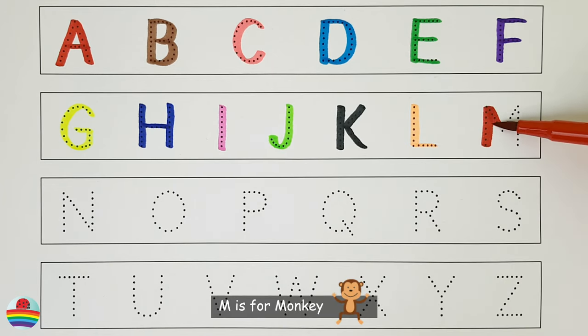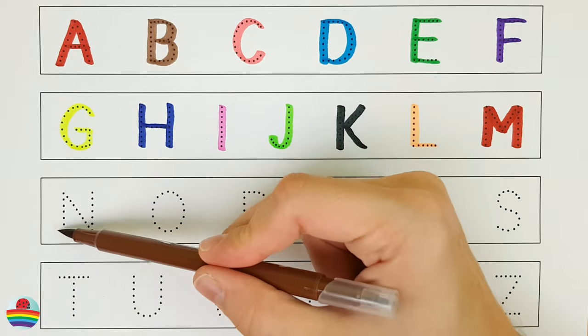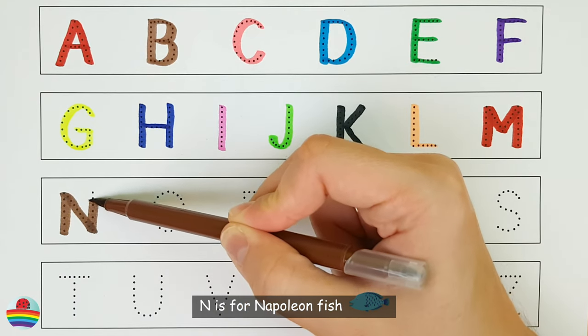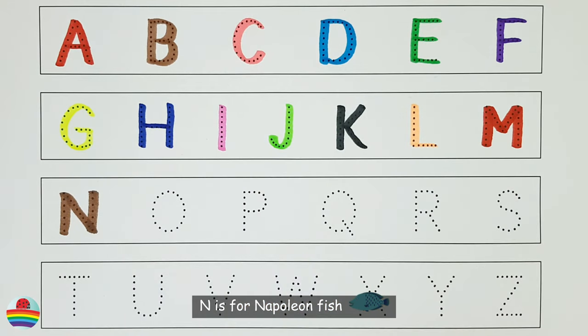M. M is for monkey. N. N is for napoleon fish.